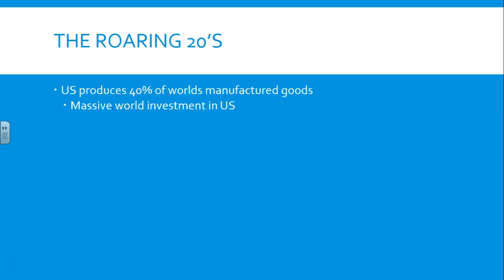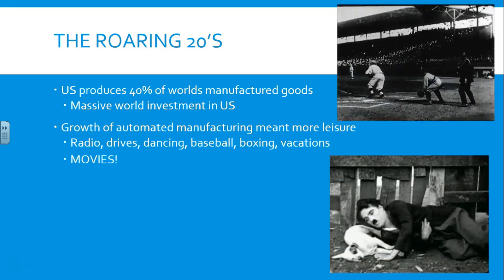U.S. production is going to be 40% of the world's manufactured goods in the 1920s. The United States is manufacturing a ton of stuff. Additionally, a large amount of the world is investing and putting money into the United States, into U.S. companies, ensuring that these companies keep producing so that they can keep buying.